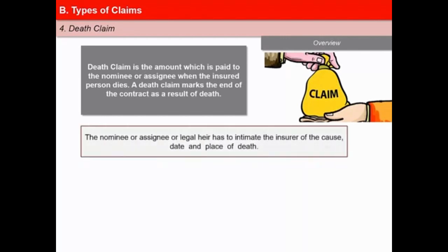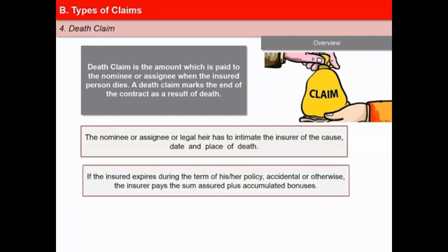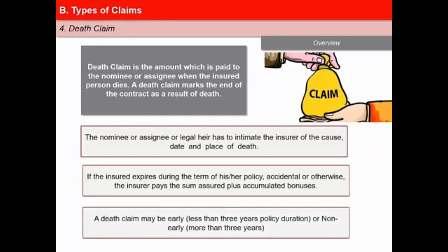The nominee, assignee, or legal heir has to intimate the insurer of the cause, date and place of death. If the insured expires during the term of his or her policy, accidental or otherwise, the insurer pays the sum assured plus accumulated bonuses if participating, less dues like outstanding policy loan and premiums plus interest thereon respectively. A death claim may be early, meaning less than three years of policy duration, or non-early, meaning more than three years.